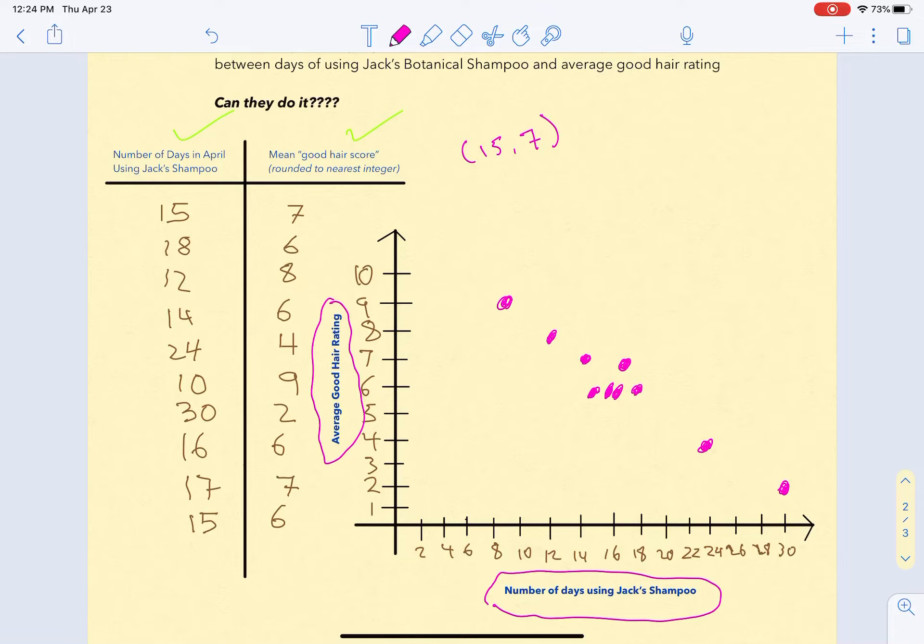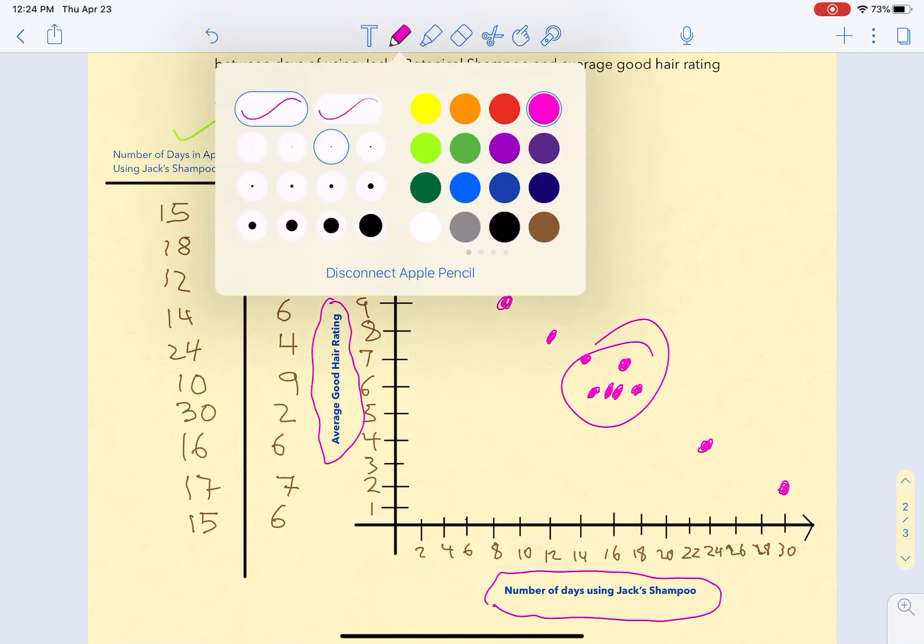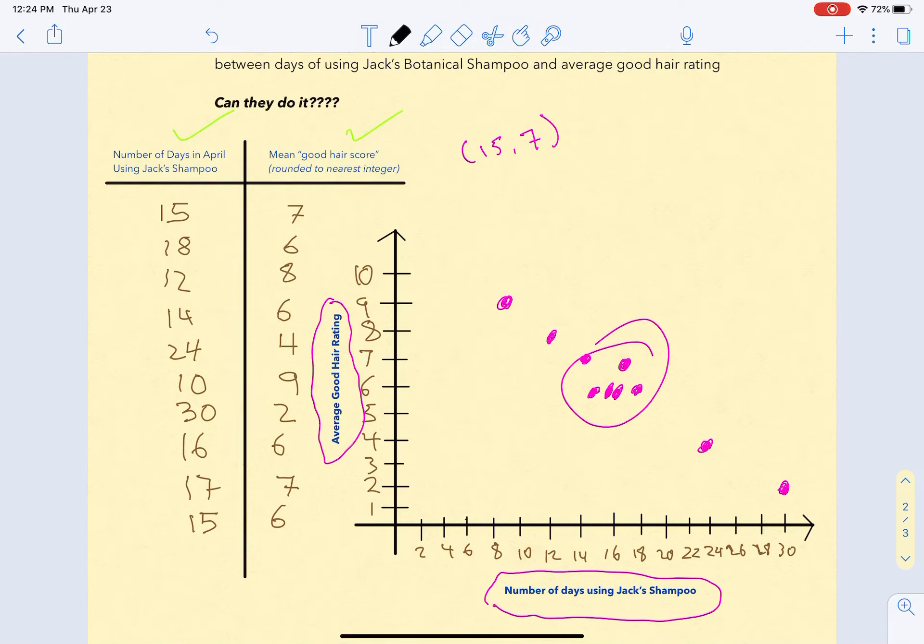Now there are several things you could notice. One is that we have a cluster of data right here. The really key thing is to look at the pattern of association. What happens as people use Jack's shampoo more and more? If we draw a loose line through here, the results are not looking good for Jack's company. As people use Jack's shampoo more and more, they're actually reporting their hair looks worse.